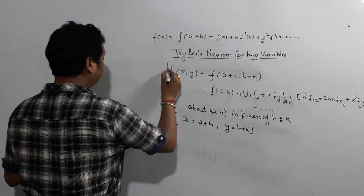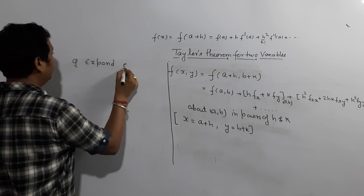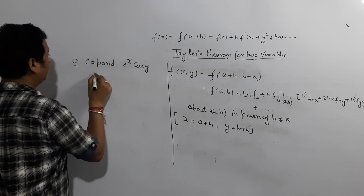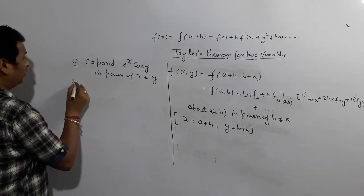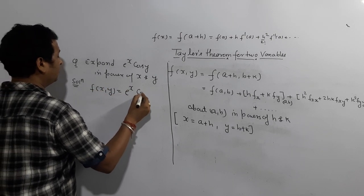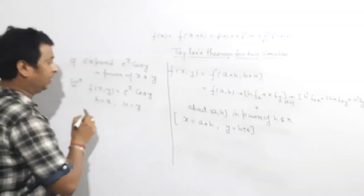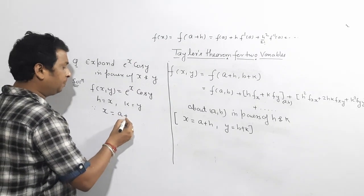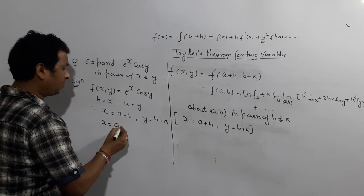For example, suppose the question is: expand e^x cos y in powers of x and y. So f(x,y) = e^x cos y. In powers of x and y means h value is given as x, k value is given as y. So h and k are given, which means we need to find a and b.